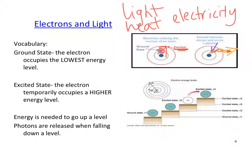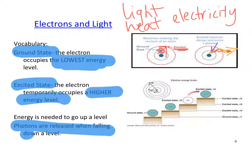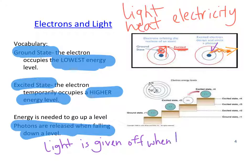So let's start with a couple of vocabulary words for this unit. Ground state is where the electron occupies the lowest energy level. The excited state is where the electron occupies a higher energy level. Energy is needed to go up a level, but photons are released when falling down. So let me write that again in a different way. Light is given off when the electron falls. That's your important point there, when the electron falls.